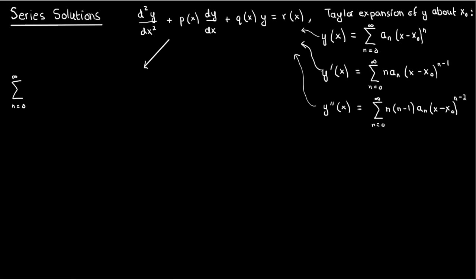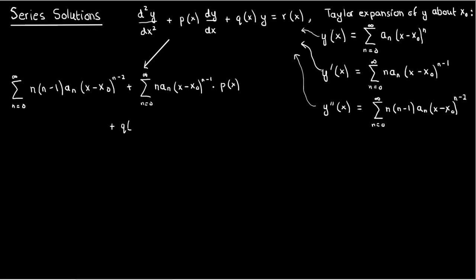For the first derivative you just bring the n down and reduce the power by 1, and for the second derivative you bring the n minus 1 down and reduce the power by 1 again. If we take these expressions and substitute them into our ODE, we'll have the sum from n equals 0 to infinity of a_n times n(n−1) times (x−x₀)^(n−2) plus p(x) times the sum of a_n(x−x₀)^(n−1) plus q(x) times the sum of a_n(x−x₀)^n, all equal to r(x).